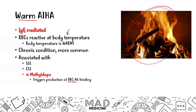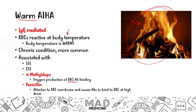Drugs can definitely cause warm hemolytic anemia. Alpha-methyldopa triggers the production of red blood cell antibodies. Penicillin can also lead to warm autoimmune hemolytic anemia — it attaches to the red blood cell membrane and causes antibodies to bind at high doses. The two drugs you need to know for warm autoimmune hemolytic anemia are alpha-methyldopa and penicillin.